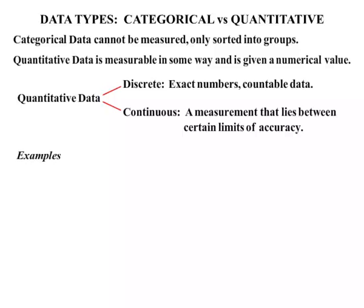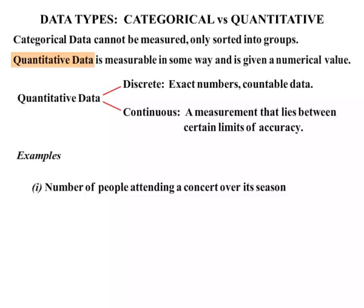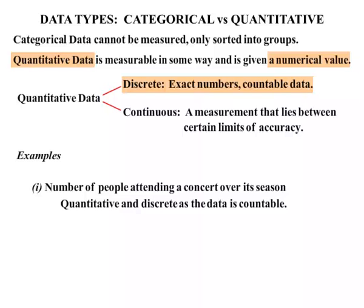Let's look at some examples. Part one: the number of people attending a concert over its season. It's certainly quantitative data because we're going to give it a numerical value. It's discrete because we're dealing with exact numbers — the data is countable.